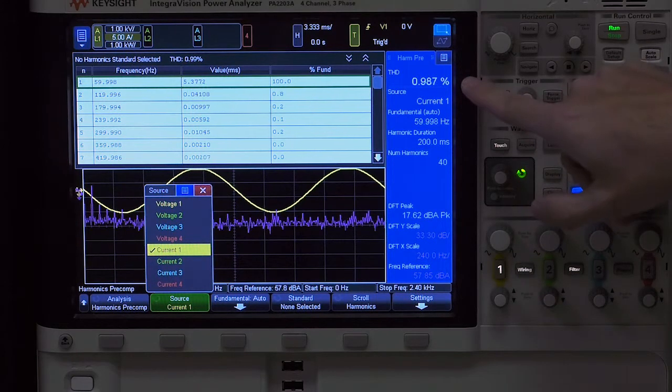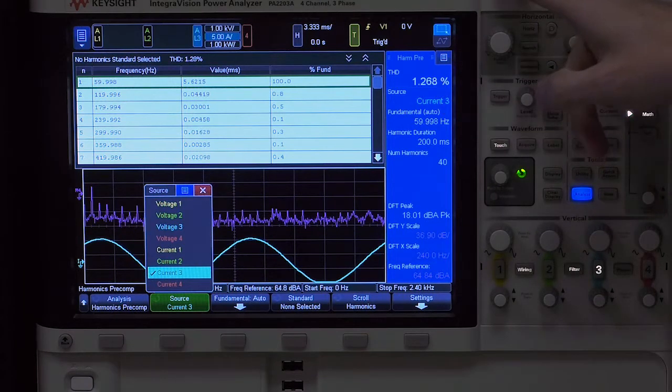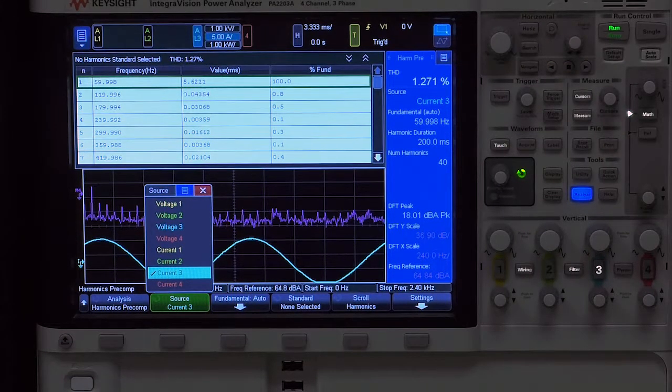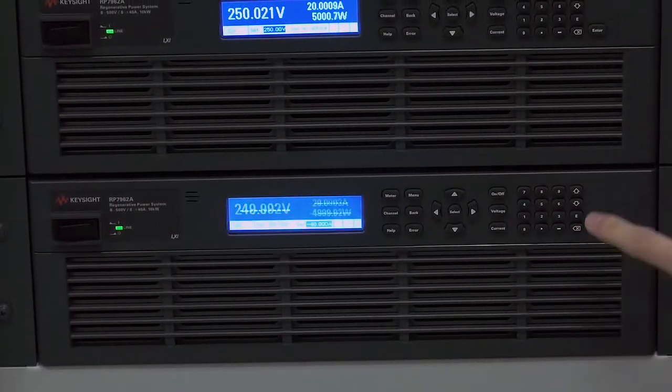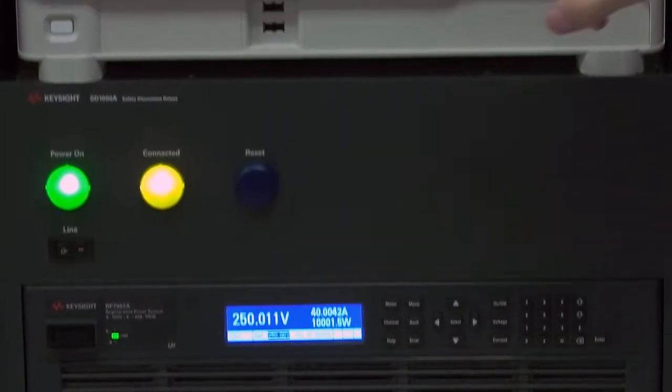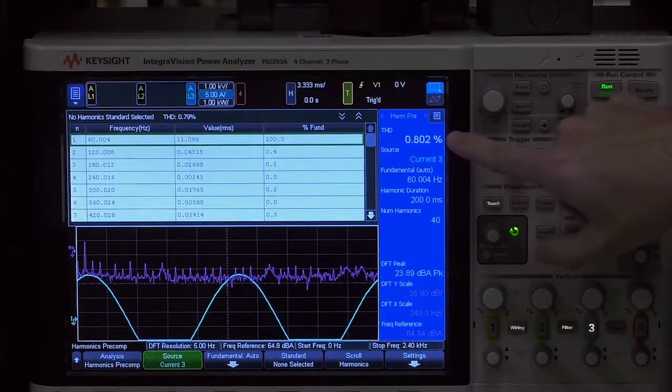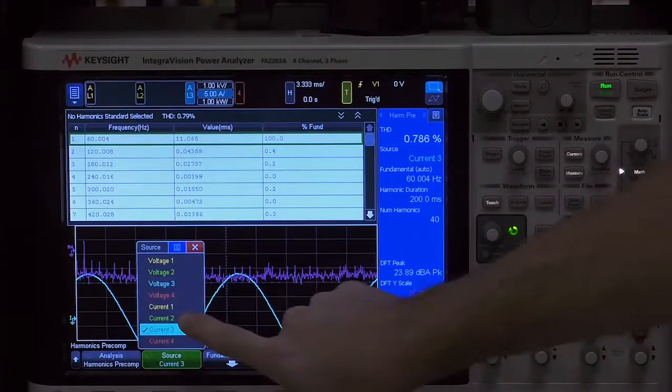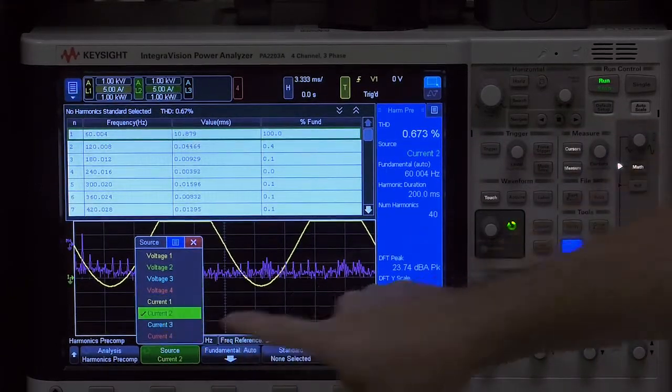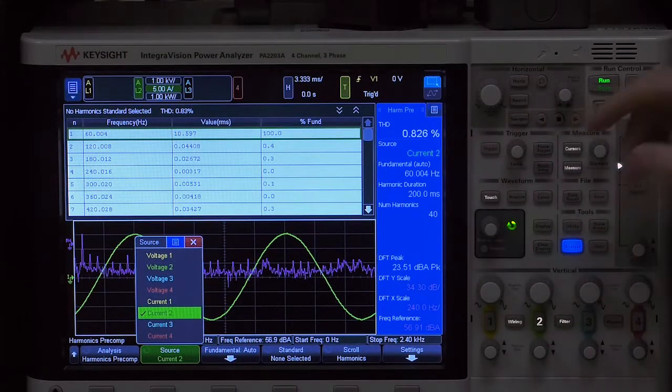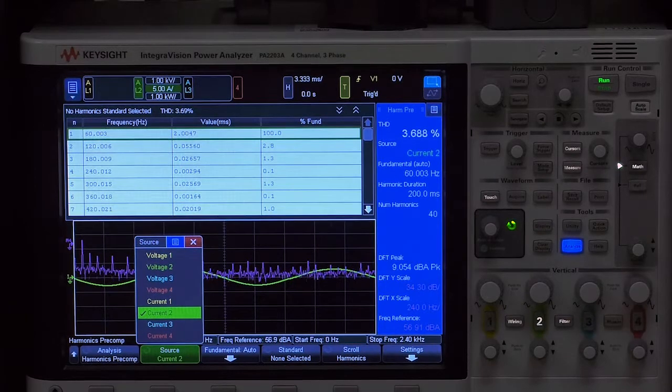1.2 percent. Again, this is at 5000 watts. Now these are 10 kilowatt power supplies, so if we go all the way up to 10 kilowatts, or 40 amps, you can hear the fan noise picking up to cool it. But you can see the THD actually gets even better. It's sub one percent, about 0.8 percent. And again, we can look at one of the other phases. 0.6 percent, again roughly the same. And then the last phase, 0.8 percent.